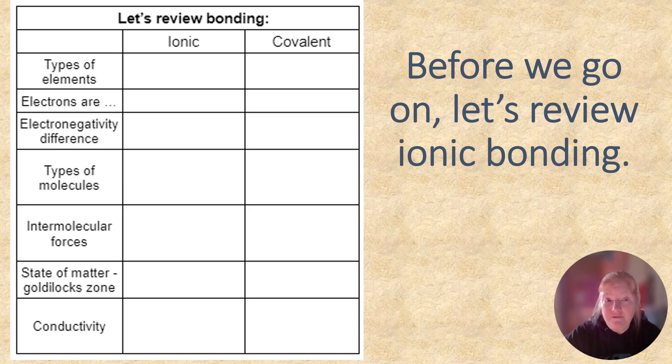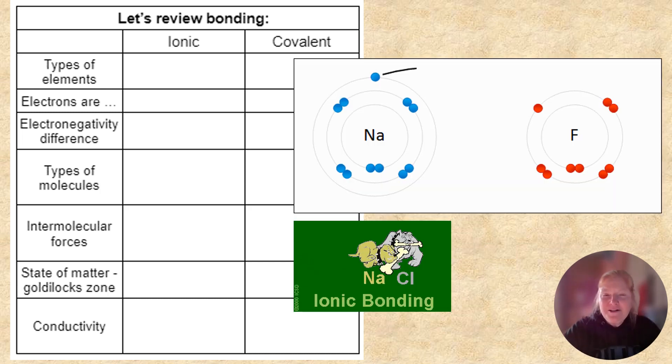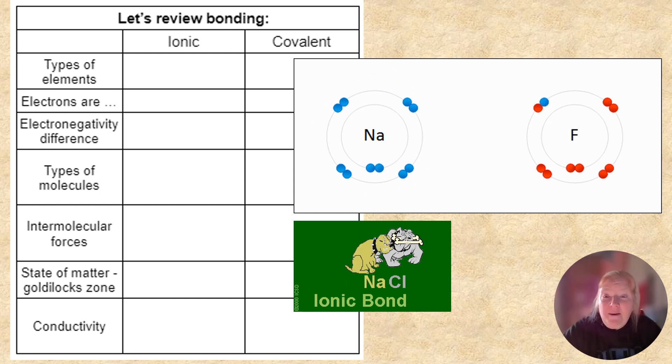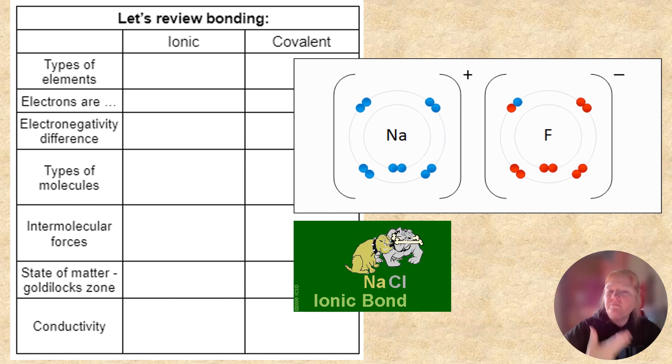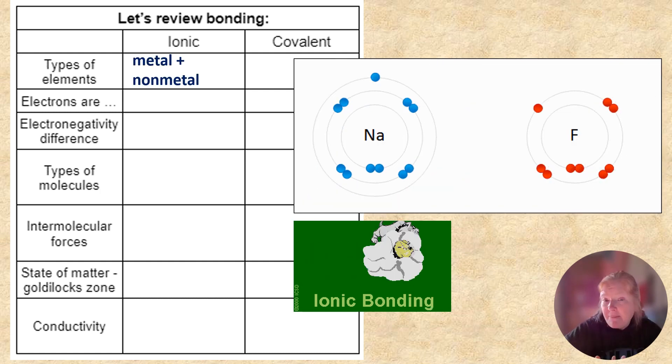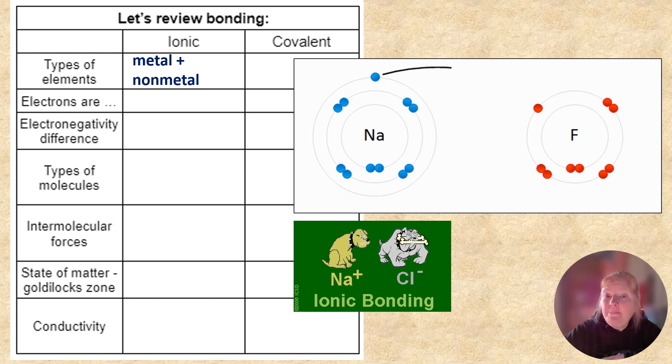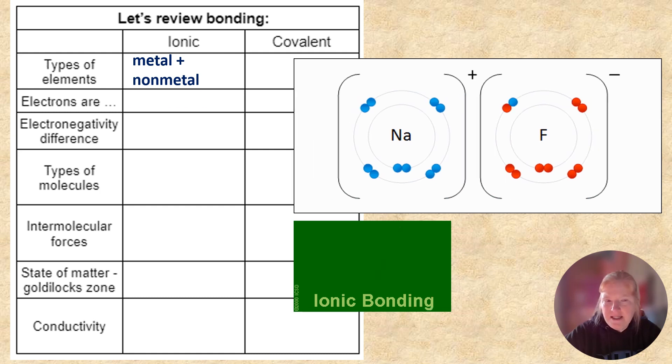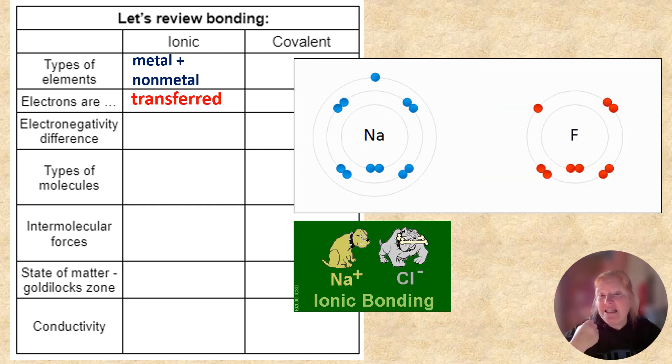So let's focus on ionic bonding first. So here are some GIFs, maybe helping you remember some of the information about ionic bonding. But what kinds of elements are involved? A metal and a nonmetal. What happens to electrons in ionic bonding? As you can see from the GIF with the dogs, they are transferred. It goes from one to the other. One steals it.